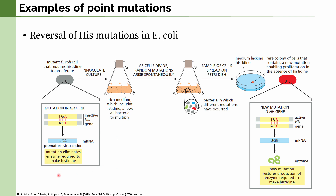So in order to grow these E. coli, you have to grow them in an environment in which histidine is present. But as these E. coli grow, eventually one of them will also have a mutation within the same gene. If you want to isolate that E. coli, you can grow that broth in a culture that lacks histidine, and only the E. coli with the mutation can survive. In this case, the mutation has actually reversed the nonsense mutation, and now this E. coli is able to produce its own histidine.